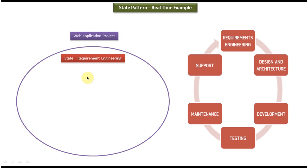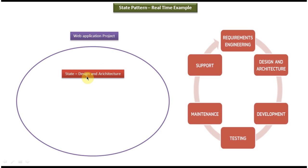Once the requirement gathering is done, the state of the project will be moved to the design and architecture phase. In the design and architecture phase, what we can do is we can design the project — meaning we can do a class diagram, sequence diagram, and we can decide what kind of technology we are planning to use in order to develop the application.